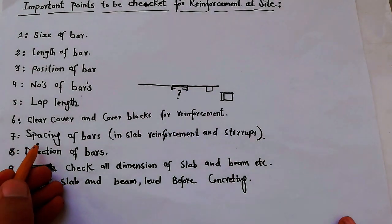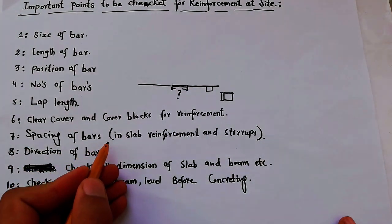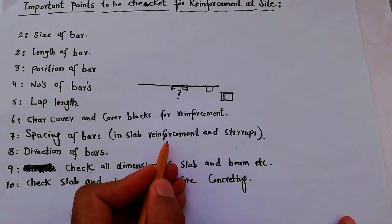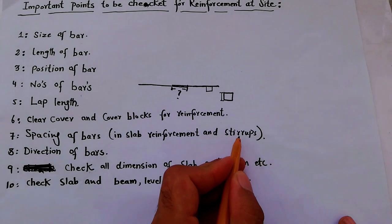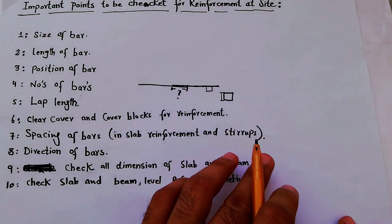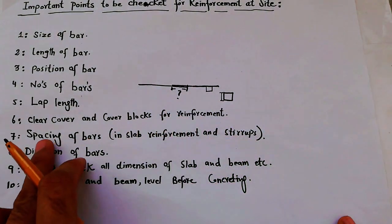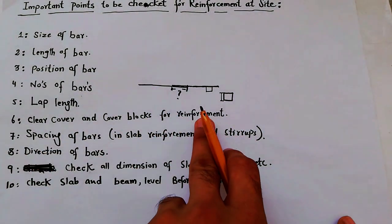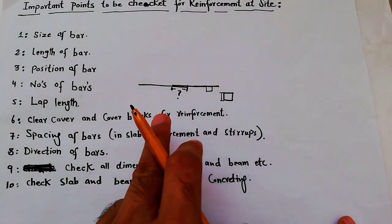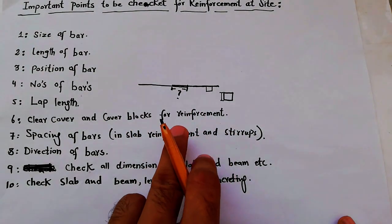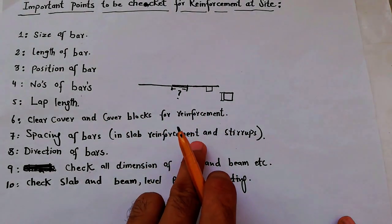The seventh one is spacing of bars in slab reinforcement and also stirrups. When you place the steel on slab, you have to check the main bar spacing and also distribution bar spacing, as well as the stirrup spacing.